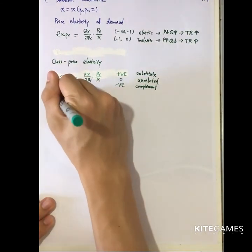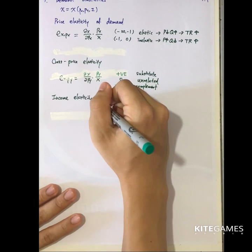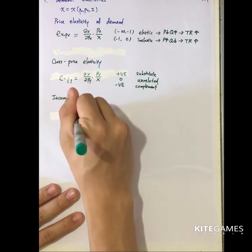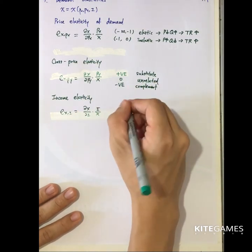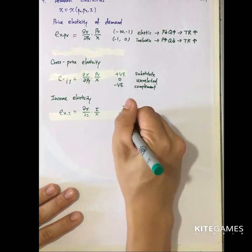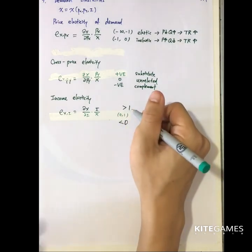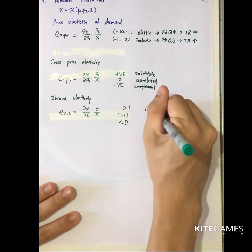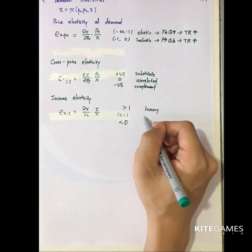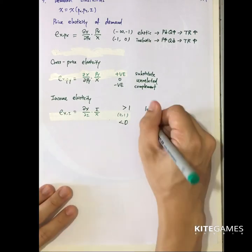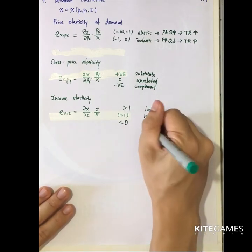Finally, there is income elasticity. This is defined as e_x_i equal to (∂x/∂i)(i/x). If it is greater than one, we call this luxury. If it lies between zero and one, that means when income increases you still buy more, but less than the proportion of the income increase — we call this necessity. Finally, if it is less than zero, that means when income increases you buy less, because it is an inferior good.